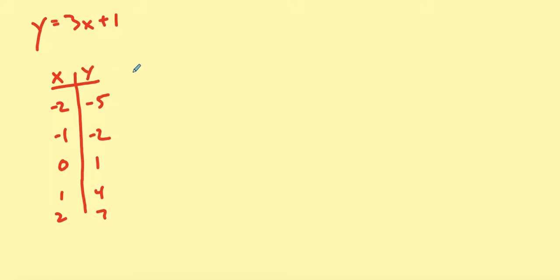So every time I plug in an x value, I'm going to get out a y value. And that would lead to a point. In fact, this point right here is just negative 2, negative 5. And I can plot that point. And all an xy chart is, is a list of points.